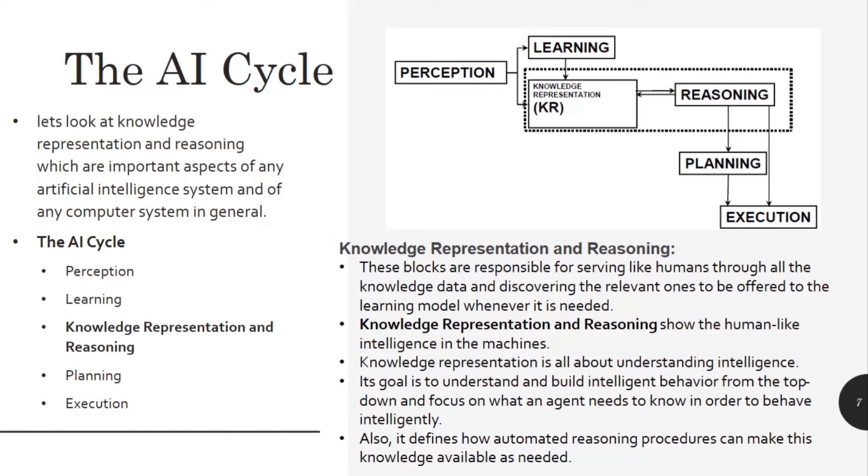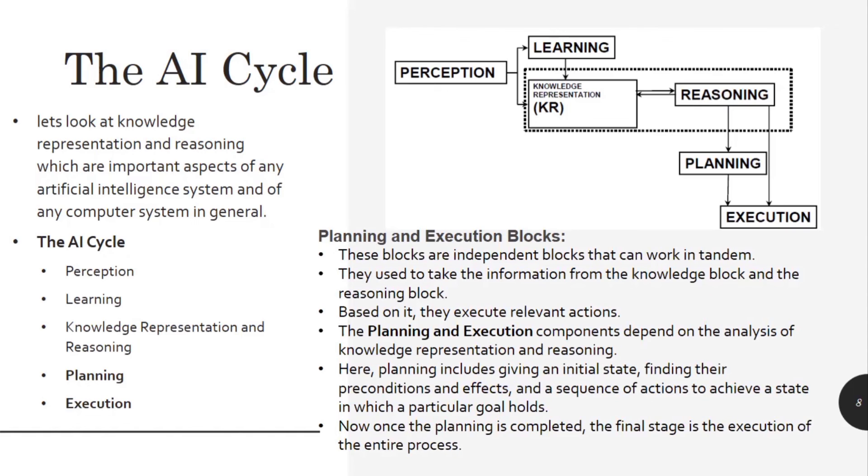Then the planning and execution. When we get the complete knowledge and are able to represent it, then we plan a system. The planning and execution blocks are independent blocks that can work in tandem. They are used to take the information from the knowledge block and the reasoning block. Based on it, they execute a relevant action. The planning and execution components depend on the analysis of knowledge representation and reasoning. These both steps depend on this block.